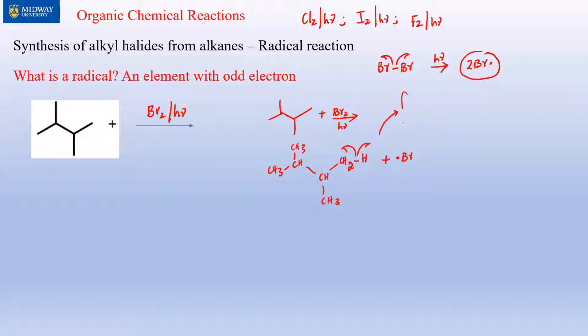We are generating CH3-CH-CH3. Write a dot on the CH2, don't write a dot on the hydrogen, plus H-Br. That's what you have produced.